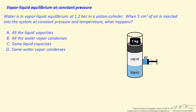This example looks at vapor-liquid equilibrium at constant pressure, where we have a piston and cylinder arrangement, and we have liquid water and water vapor at equilibrium at 1.2 bar.